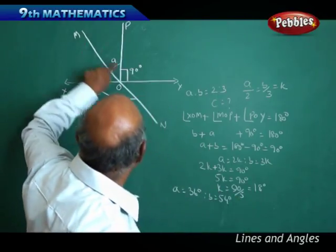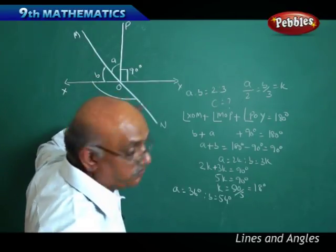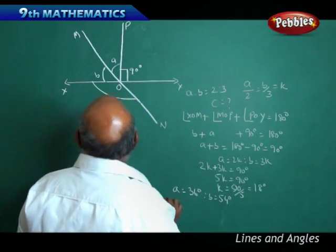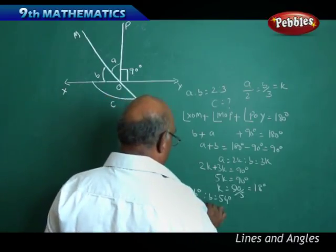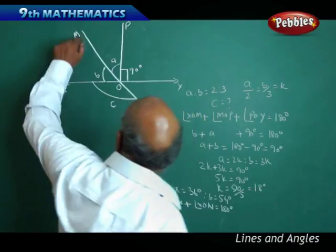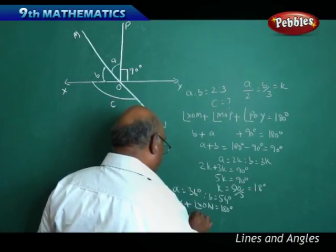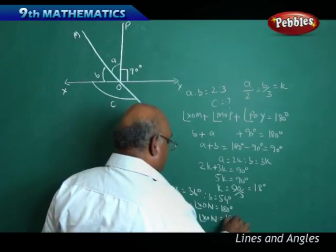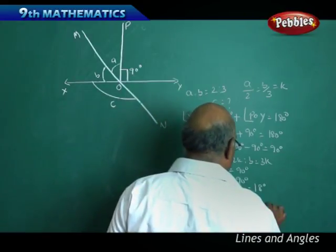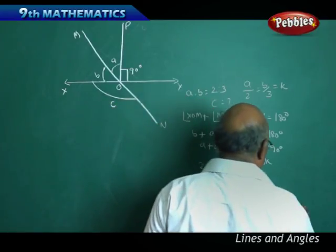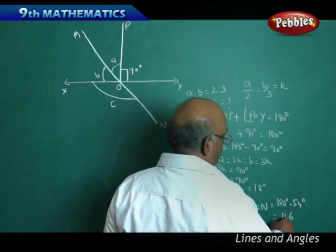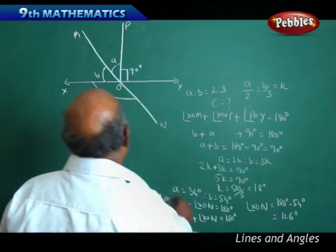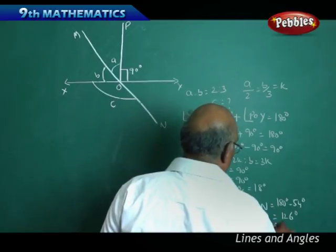Since MN is a straight line, angle MOX plus angle XON equals 180 degrees. Angle MOX equals 54 degrees, so 54 plus angle XON equals 180. Therefore angle XON equals 180 minus 54 equals 126 degrees. Therefore angle C equals 126 degrees.